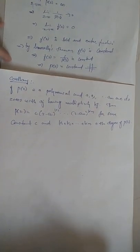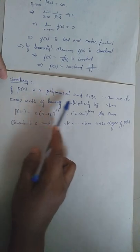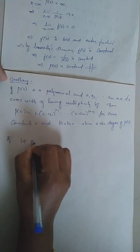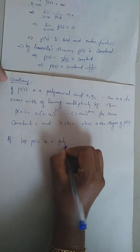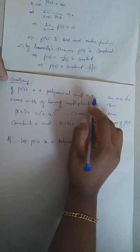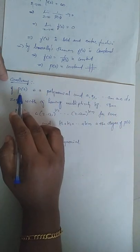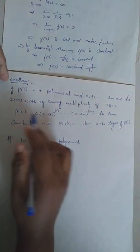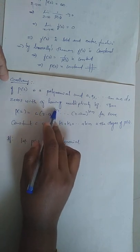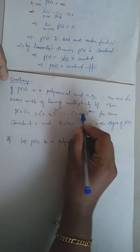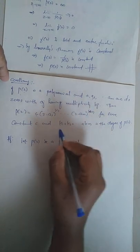Now, what is the corollary of the Fundamental Theorem of Algebra? It says: if P(z) is a polynomial and a1, a2, ..., am are the zeros of P(z) with multiplicities k1, k2, ..., km, then P(z) can be factorized as C·(z - a1)^k1·...·(z - am)^km, where C is a constant and k1 + k2 + ... + km is the degree of P(z).